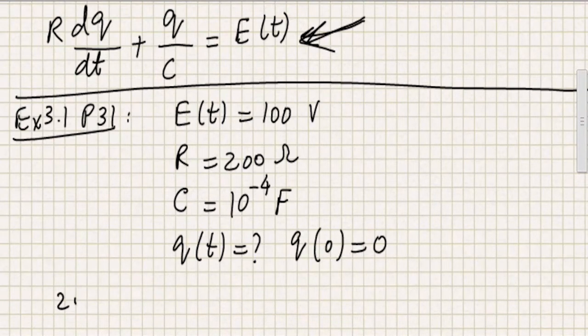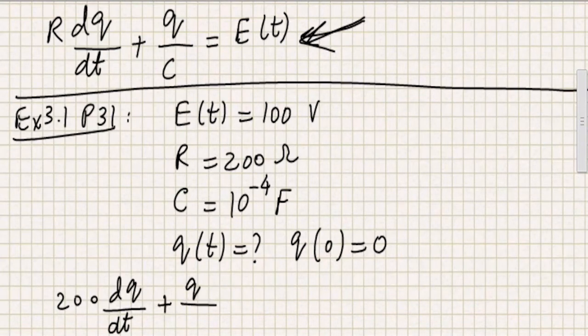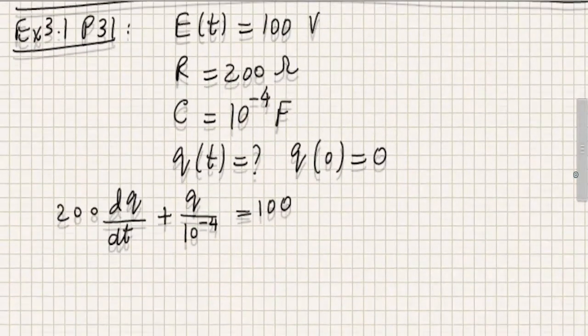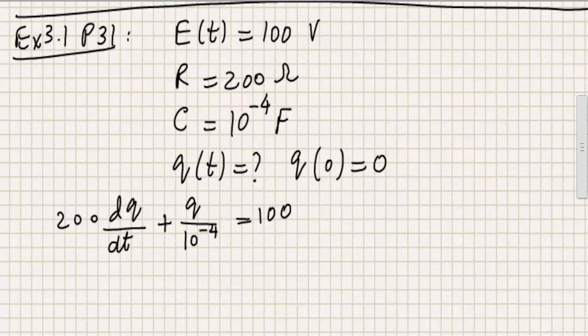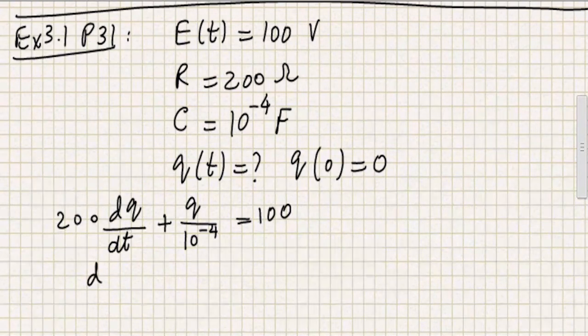and I can simply substitute the values in this differential equation. So R is 200, so 200 dQ by dt plus Q divided by C, which is now 10 raised to the power minus 4, equal to E of T, which is 100. So we are done, so the first rule of solving linear differential equations using variation of parameters was,